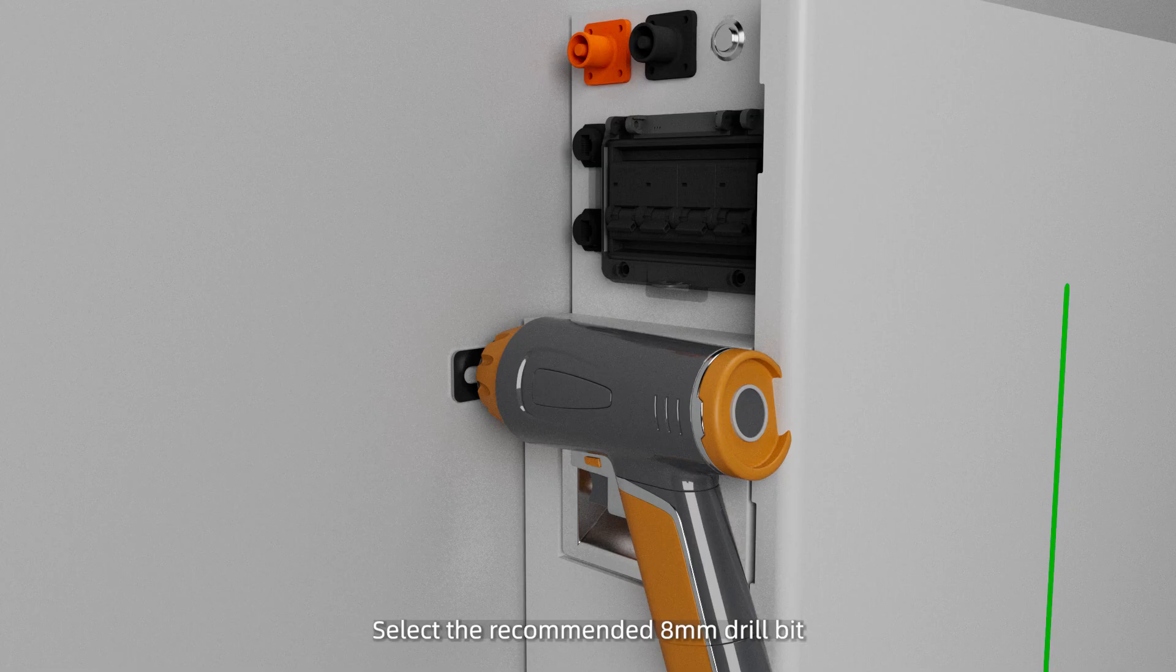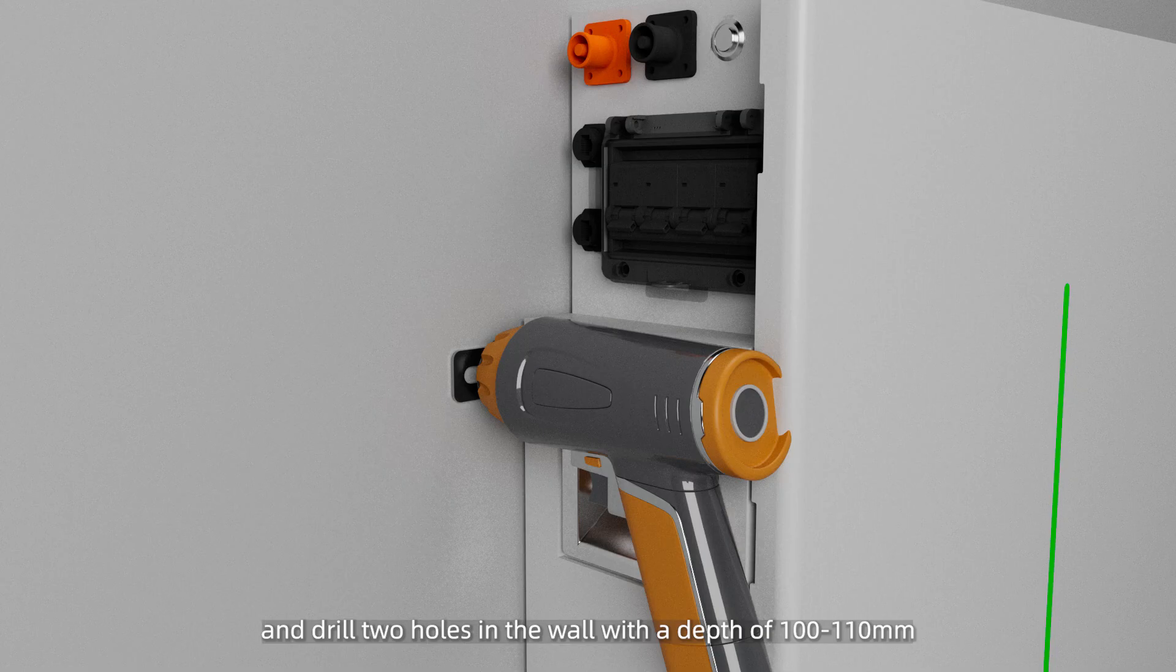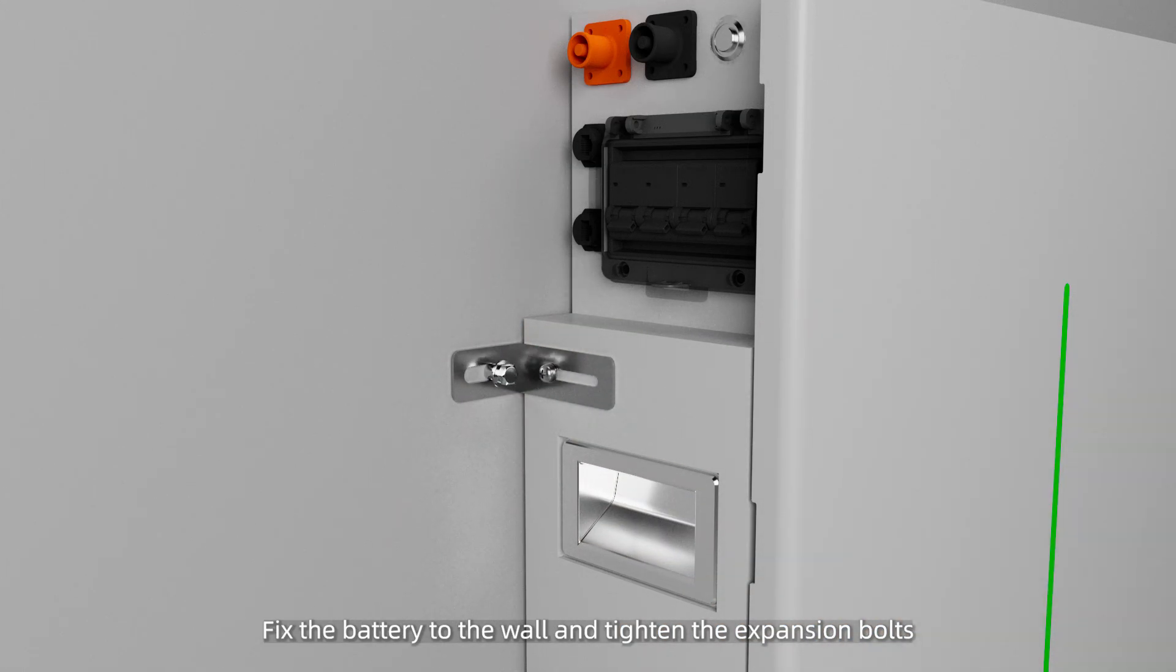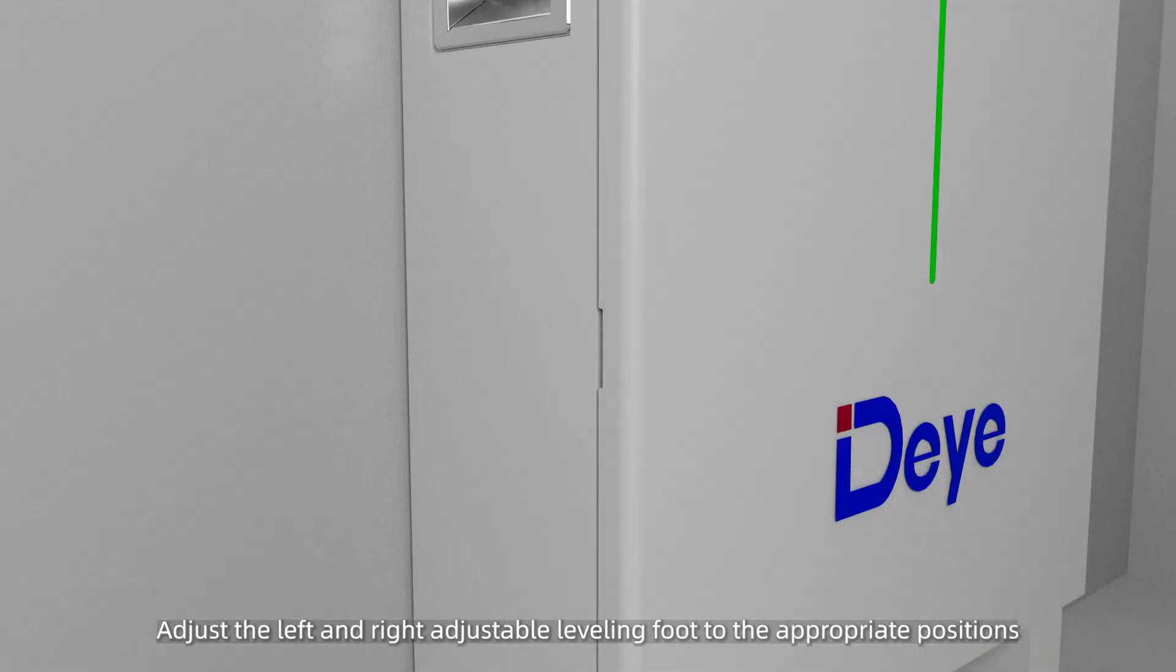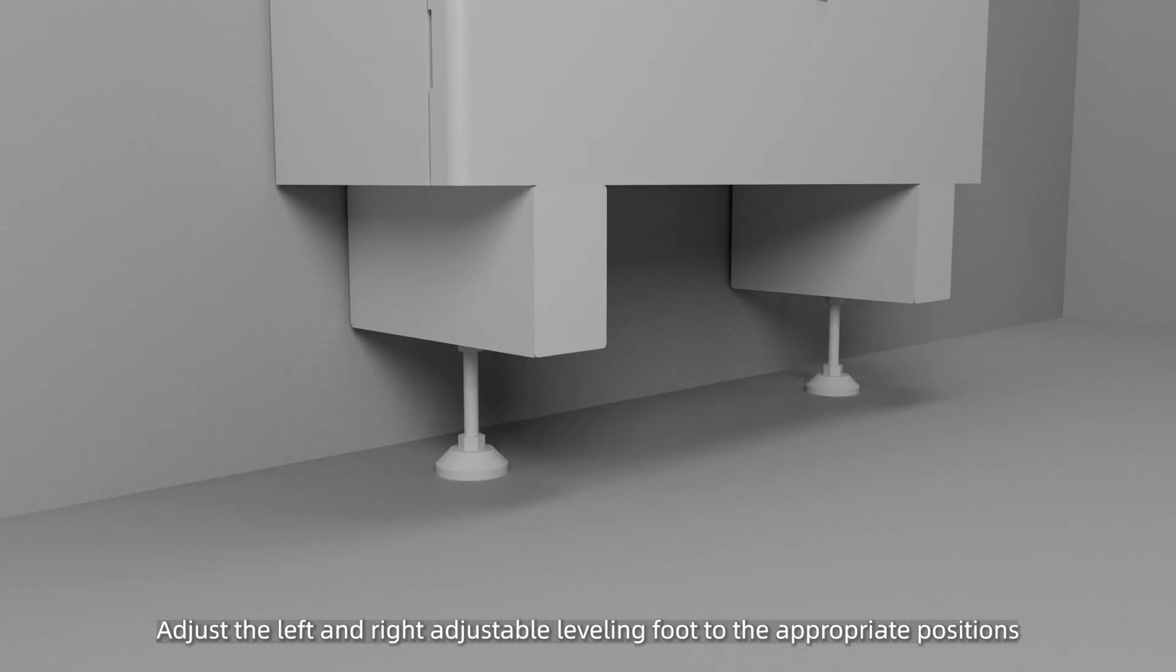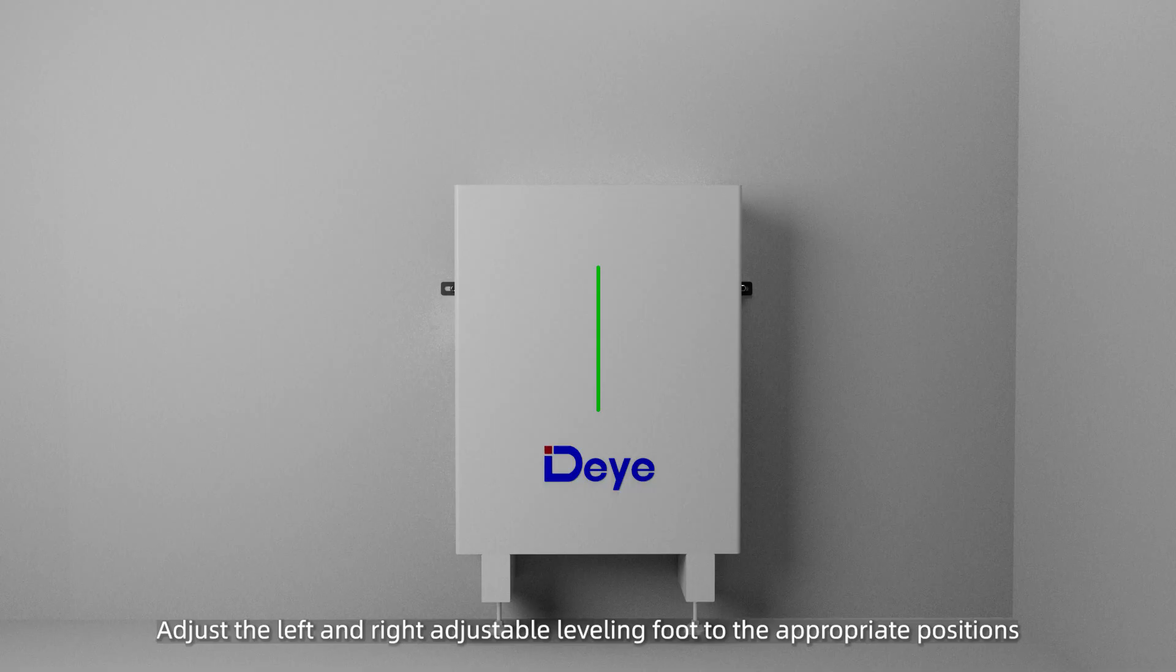Select the recommended 8mm drill bit and drill two holes in the wall with a depth of 100 to 110mm. Fix the battery to the wall and tighten the expansion bolts. Adjust the left and right adjustable leveling foot to the appropriate positions to make the battery perpendicular to the ground.